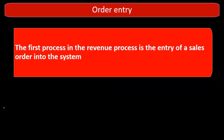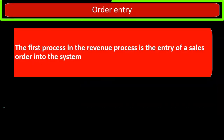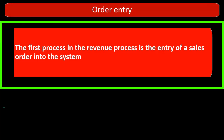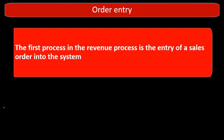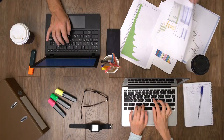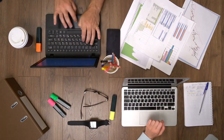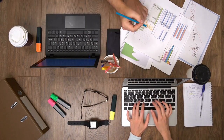So let's go over this in a bit more detail. We have the order entry — that's going to be the first process in the revenue process: the entry of sales orders into the system. That's typically the first thing we would think about with regards to the revenue process.